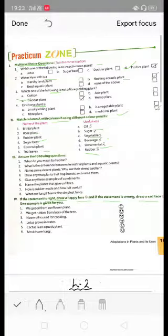Let's start. We get oil from sunflower plant. Sunflower plant se hume oil milta hai so draw a smiley. Next is we get rubber from latex of the tree. Hume rubber latex se milta hai, this is also correct.